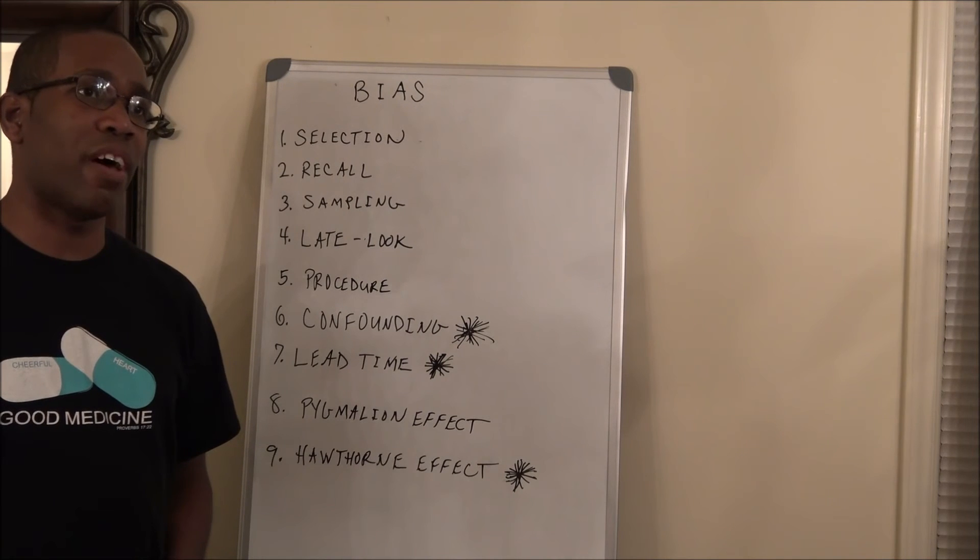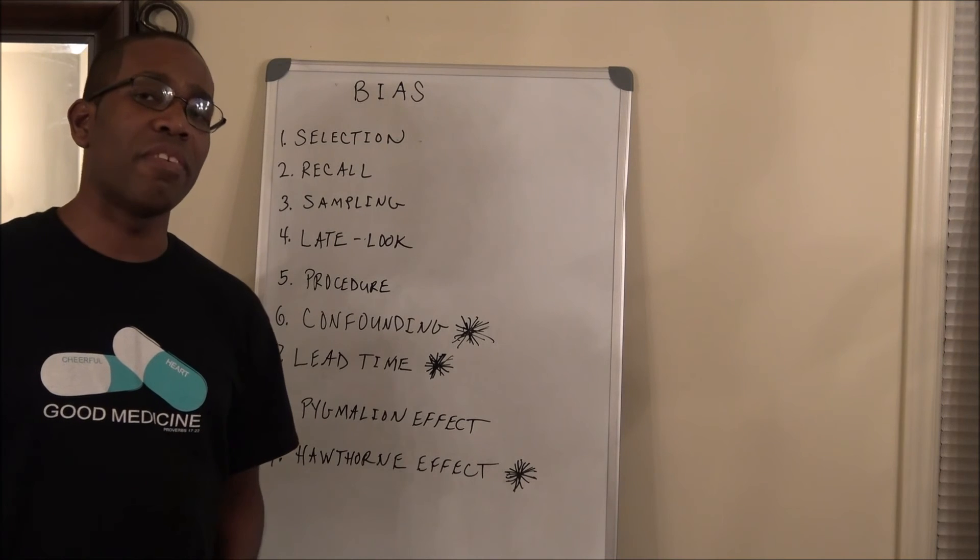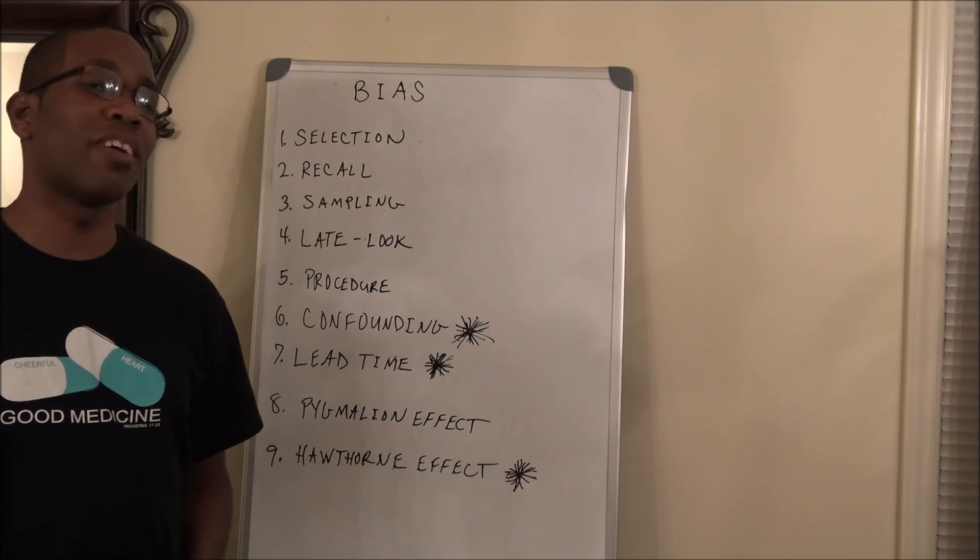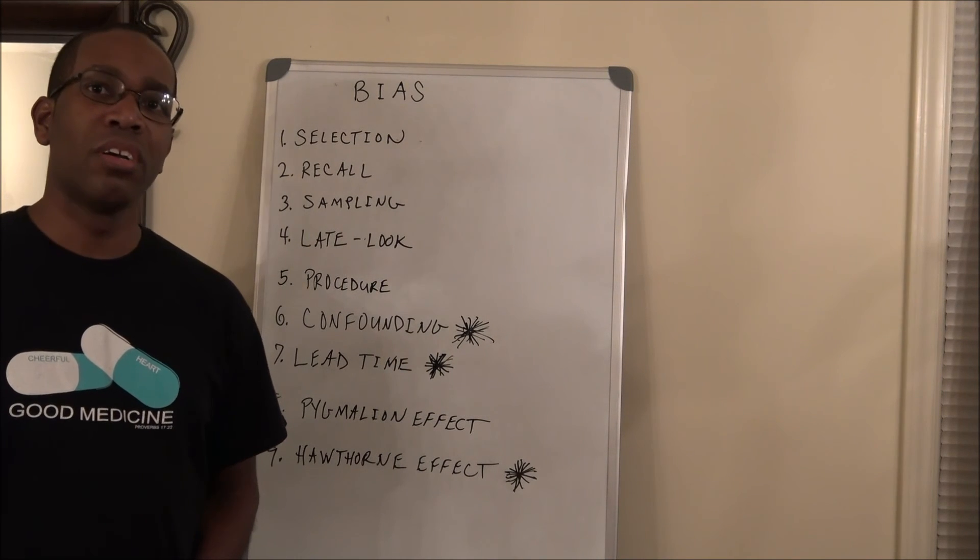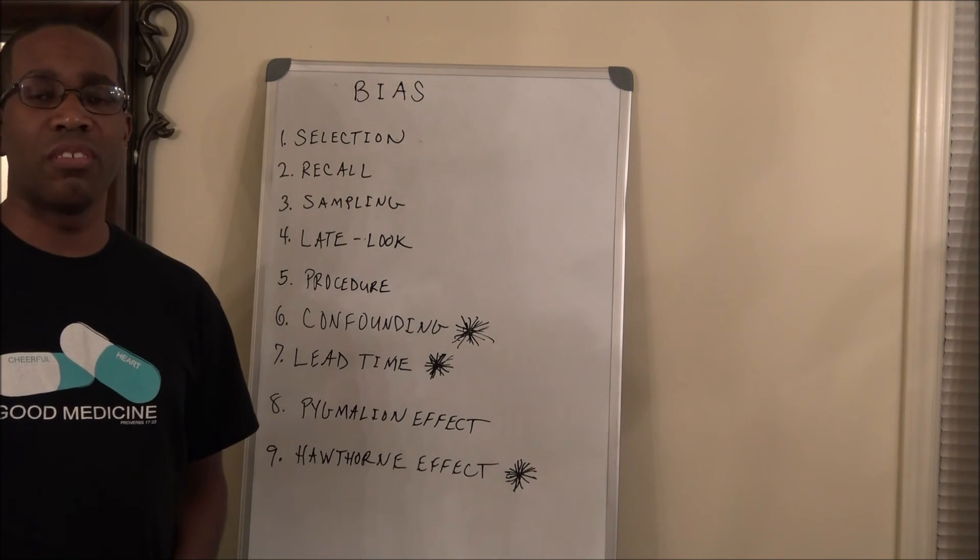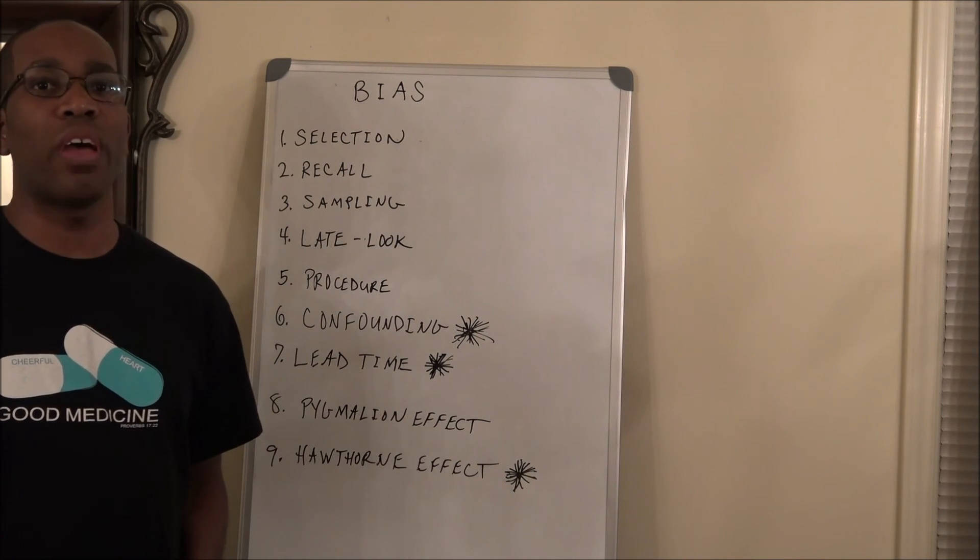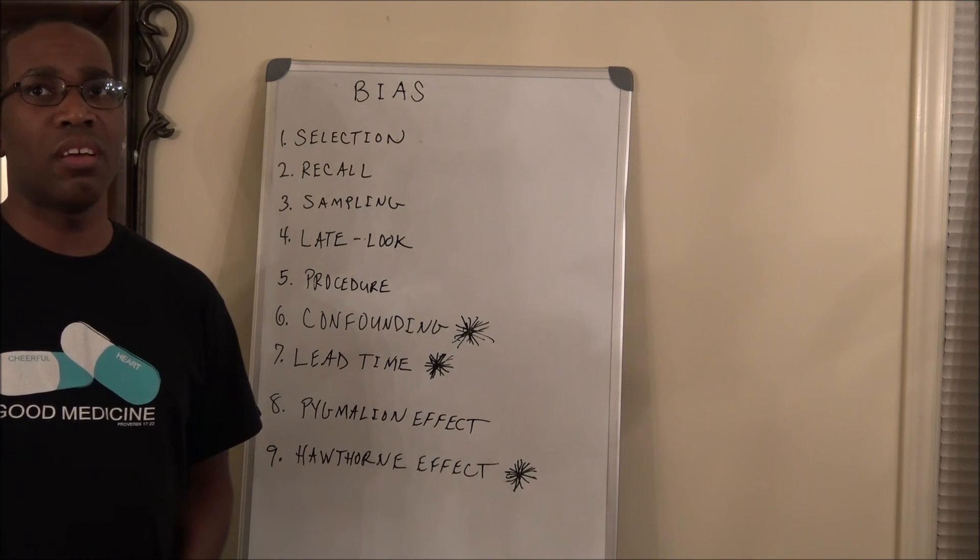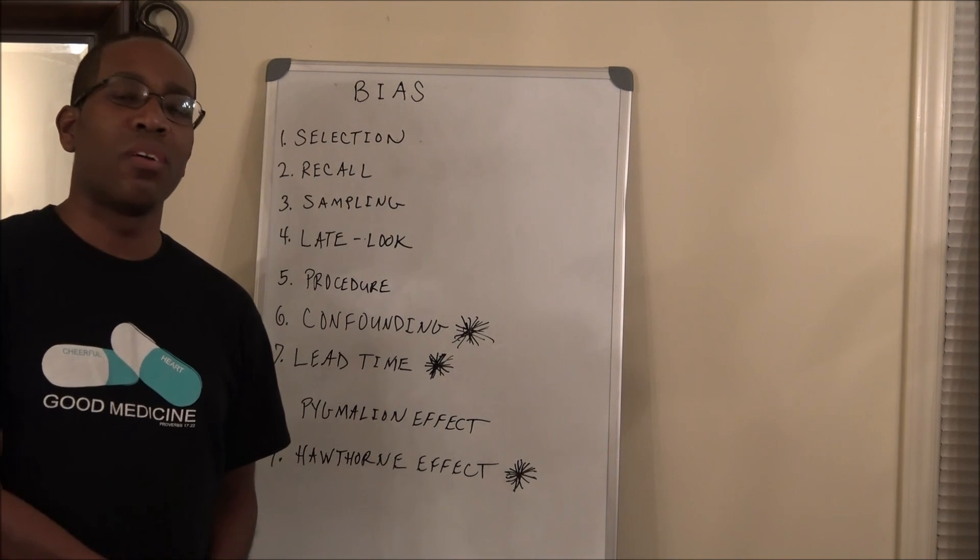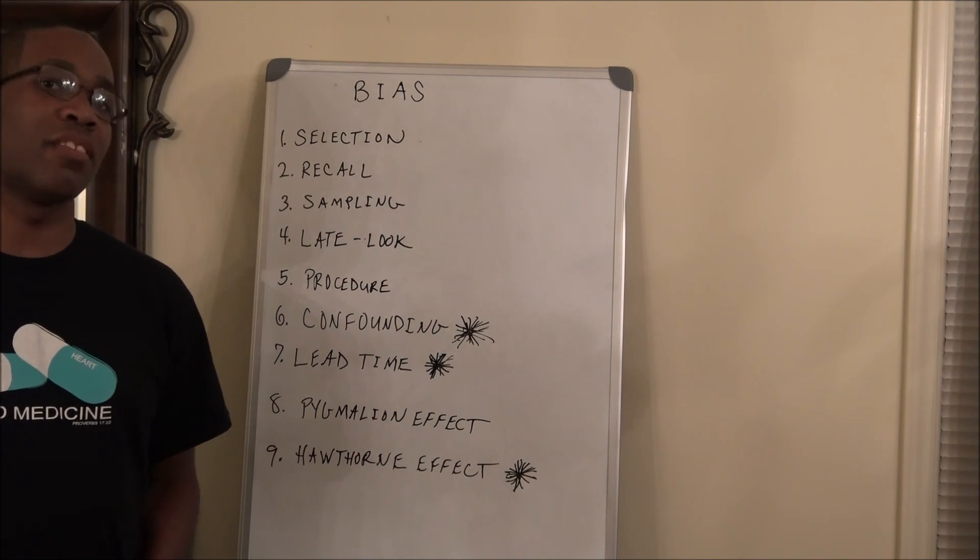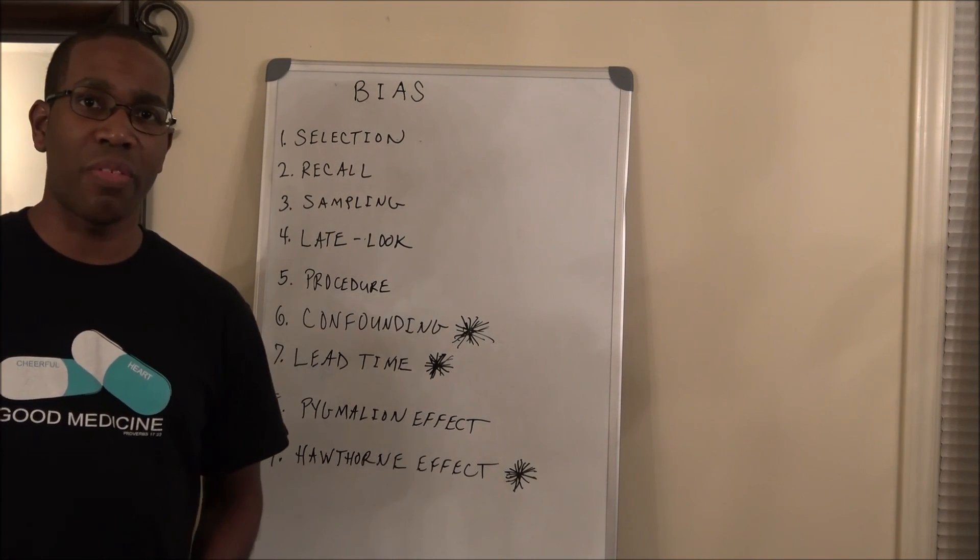Now, the Hawthorne effect often occurs with the subjects. Subjects of the study often change their behavior because they know they're being watched. For exercise studies, people exercise more. For certain other types of studies, they may change their lifestyle in a more positive way because they know they're part of the study. For doctors, let's say there's a study on vaccinations. The doctor may want to have more vaccinations than normal because he doesn't want to look bad. People don't want to look bad, and all that really comes down to is the Hawthorne effect.